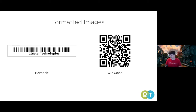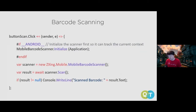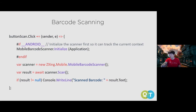Barcode scanning in Xamarin is simple and robust using the ZXing NuGet package. You grab the BarcodeScannerObject, set up a click event, trigger a scan, and get back the text result from the barcode scan.